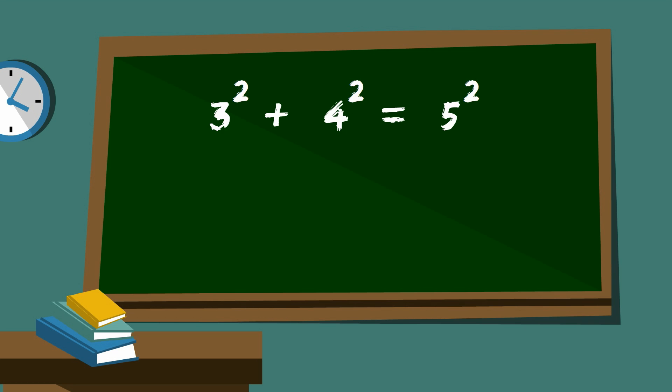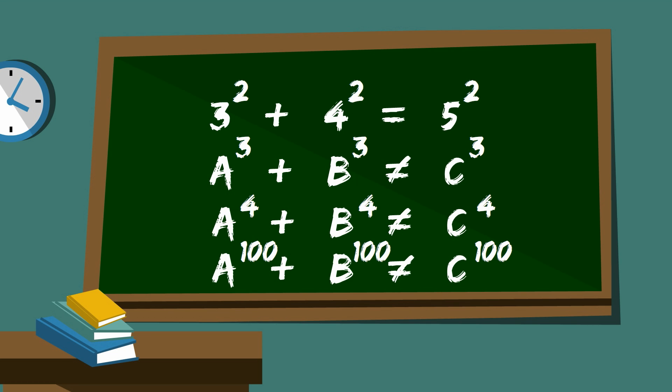Fermat's Last Theorem says that you can't replace the two with any higher number. So, it's impossible to get two cubes that are added together to get a cube. It's impossible to get two fourth powers that add together to get a fourth power, and take any number greater than two. It's impossible to take two hundredth power numbers and add them together and get a hundredth power number.